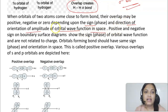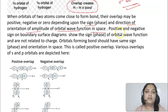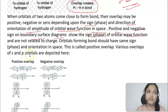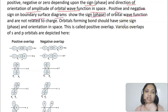The overlap of atomic orbitals may be positive, negative, or zero depending on the sign and direction of the orbital wave function. The positive and negative signs on boundary surface diagrams show the sign of the orbital wave function — it is not charge. Orbitals forming bonds must have the same phase or orientation in space; this is called positive overlap. If plus and minus phases overlap, it is negative overlap.